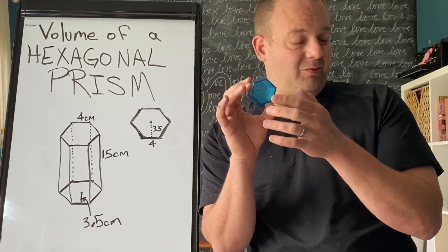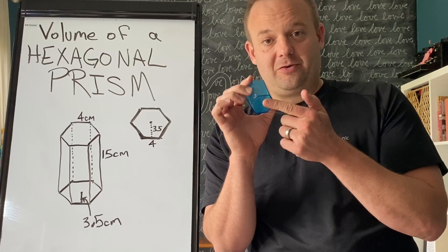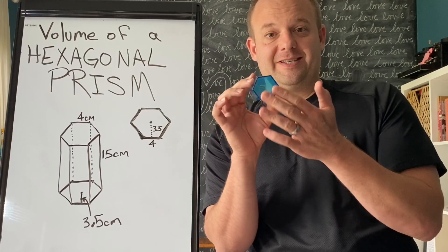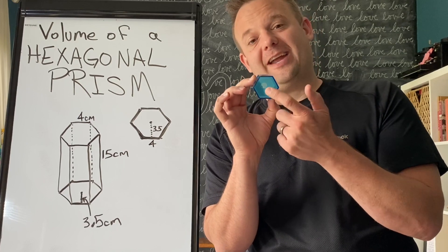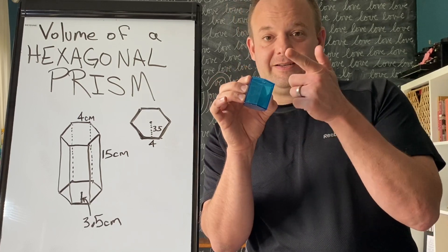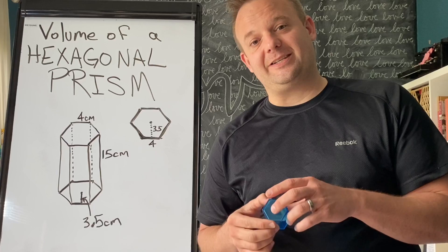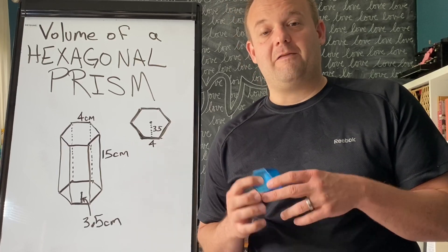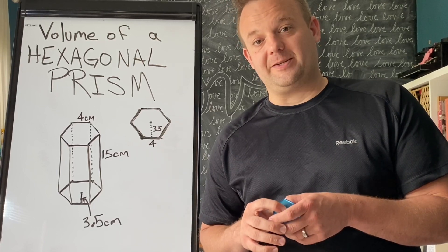So if this were a cylinder, you would do the area of the circle times the height. If this is a hexagonal prism, you have to find the area of the hexagon times the height. So the area of the base times the height works for any volume of a prism.